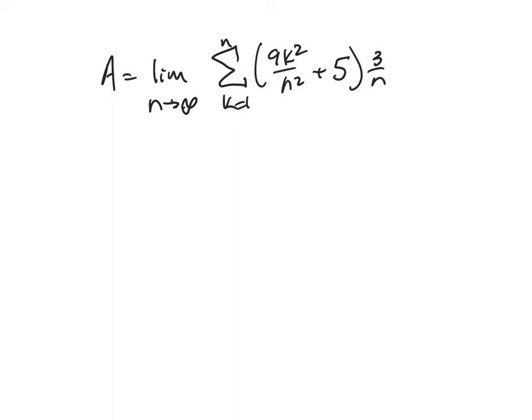So here's that area expression, and then what we need to do is start evaluating this sigma sum so that we can take the limit. And so we're just going to start by doing some algebra here. I'm going to distribute the 3 over N, and that will give me two terms, 27k squared over N cubed plus 15 over N.